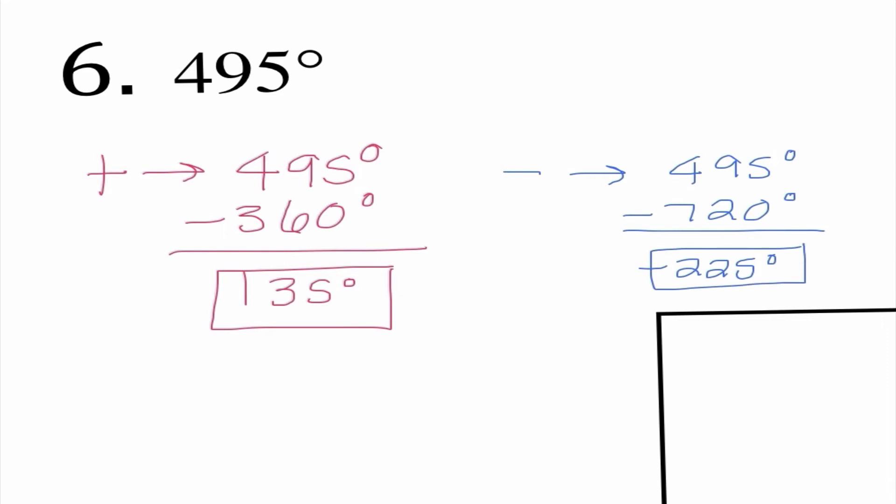For number 6, we're talking about 495 degrees. I'm going to subtract 360 degrees, which gives me 135 — a positive coterminal angle. To find a negative coterminal angle, I take 495 and subtract 720. 720 is two full circles. So I get negative 225 degrees as a negative coterminal angle. Coterminal angles don't really get much tougher than this — it's adding or subtracting 360 degrees, or when we get into radians, adding or subtracting 2 pi.